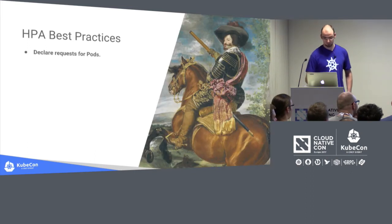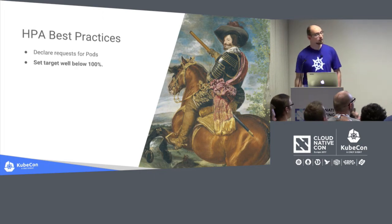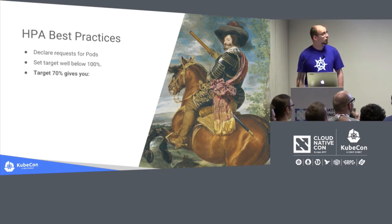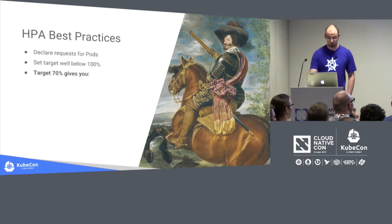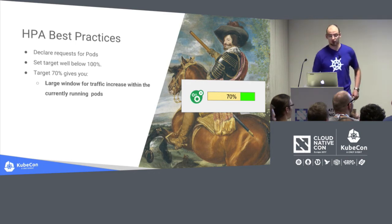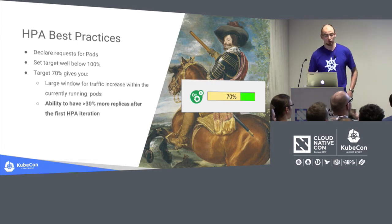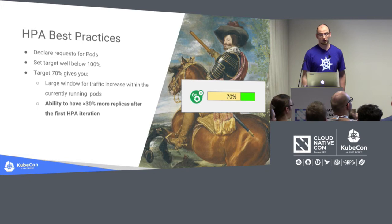What else is important: please declare requests for pods — it's critical, not only for HPA but without a request HPA won't work at all. Set the target well below 100%. The green area here is your slack — the bigger it is, the more sudden traffic you can handle in the pod before new HPA-started pods are up and running. That green area is also what scales up your deployment — it represents the amount of traffic that will go to your new pods.